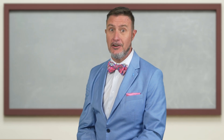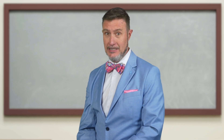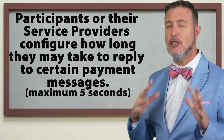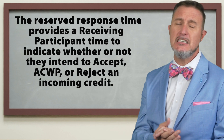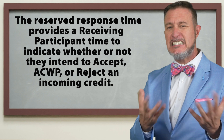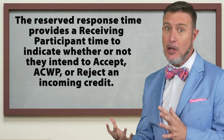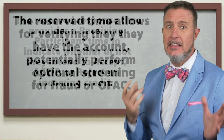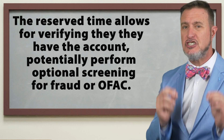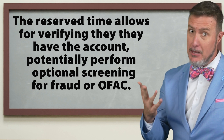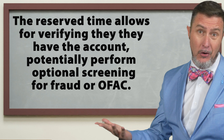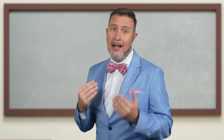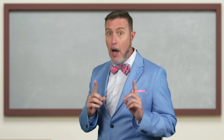Our next setting is the reserved receiver FI response time. Participants or their providers can decide and adjust how long they take to reply to certain payment messages. This is a reserved response to provide a receiving participant with time to indicate whether they intend to accept, reject, or possibly accept without posting an incoming credit transfer. It's basically the amount of time the receiving participant wants to reserve to verify they actually have the account, and maybe run optional screening like for fraud or even OFAC. The FedNow Service allows a receiving participant to configure a response time frame up to a maximum of five seconds.